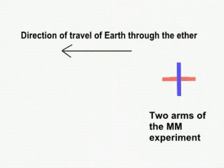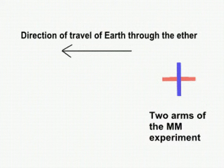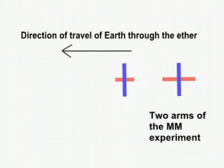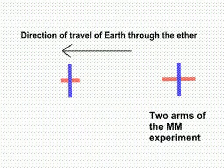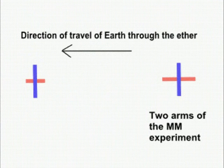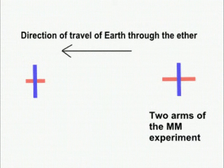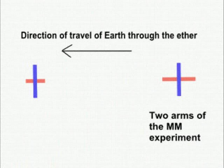They rushed out the theory called the Fitzgerald-Lorenz contraction. This claimed that the tube in line with the direction of movement shortens as it moves through the ether. There was no evidence whatsoever for this — it was only a way of getting over the implication that the Earth was stationary.